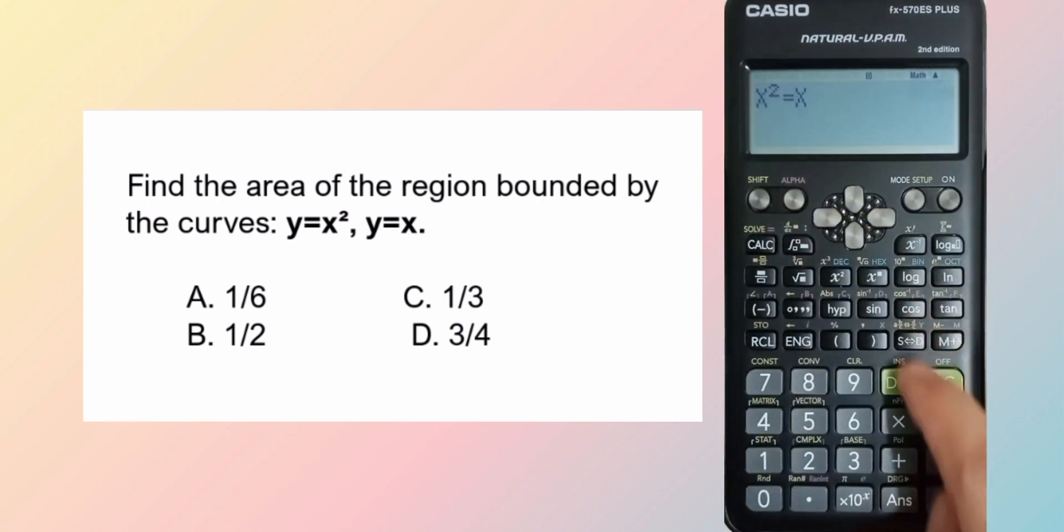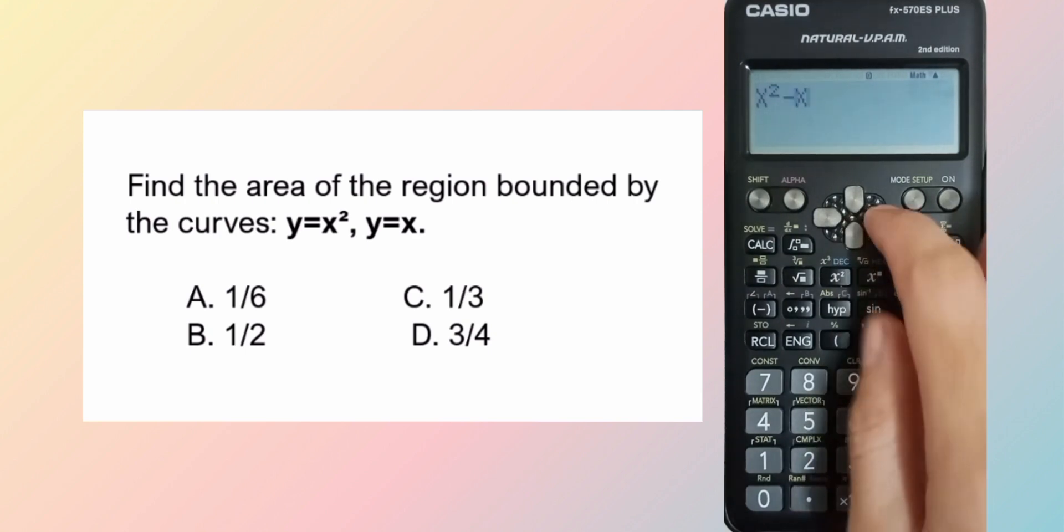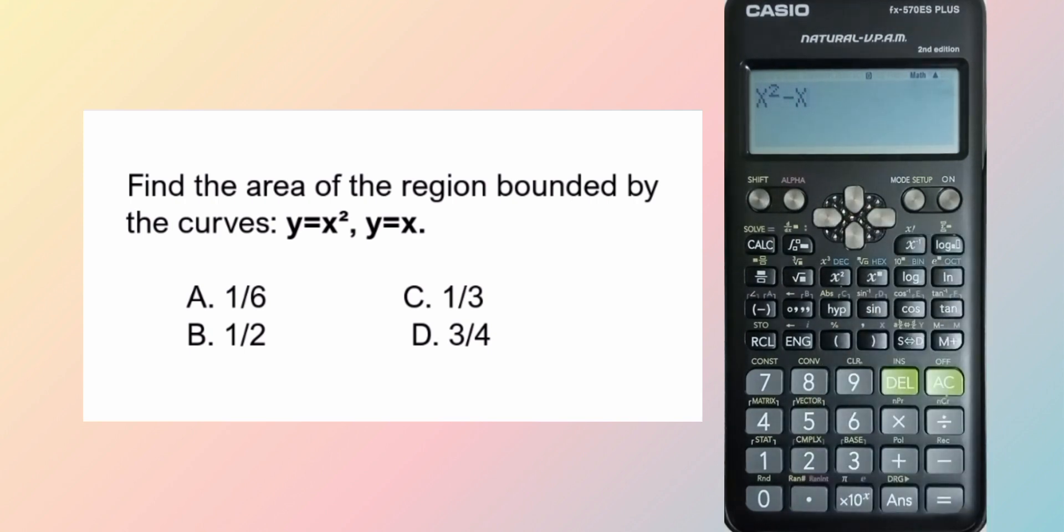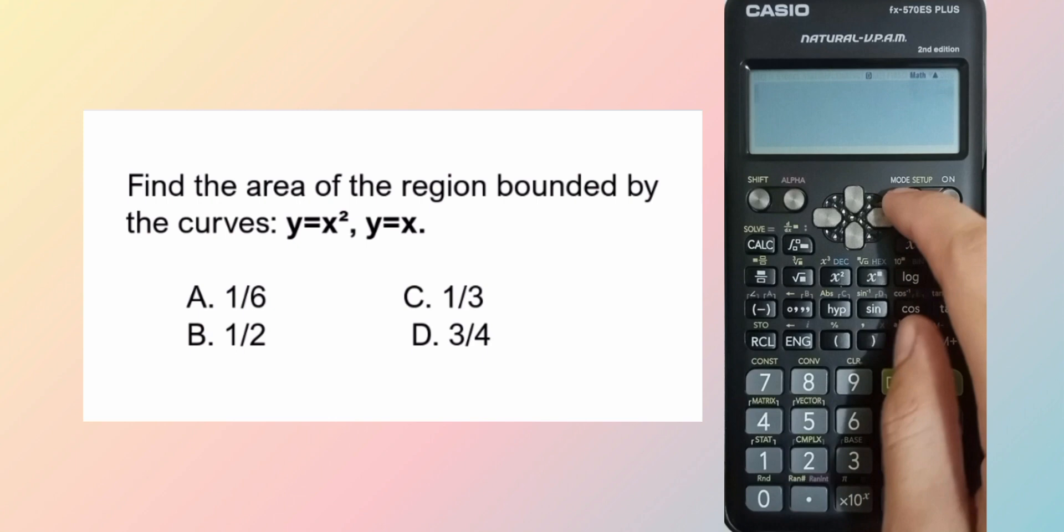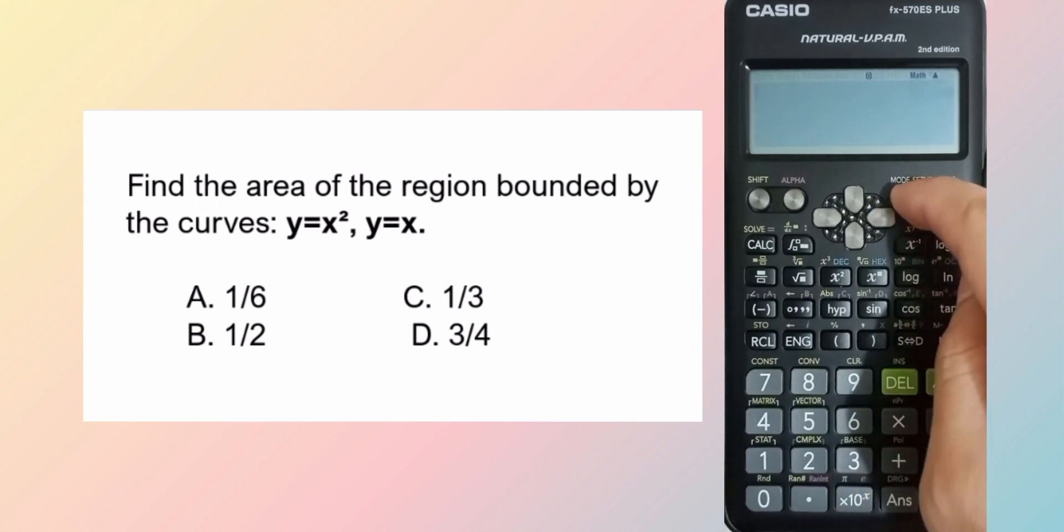Gagawin ko po siyang quadratic, x squared minus x is equal to 0. Remember, x squared minus x is equal to 0. So quadratic equation.